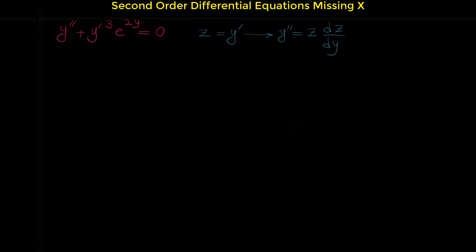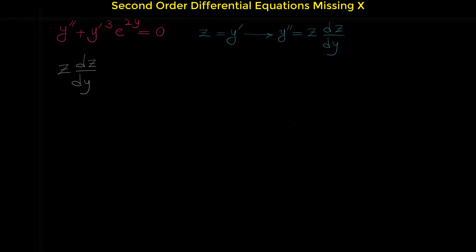Based on this substitution, if we replace y double prime with z dz over dy, and replace y prime with z, we get to this differential equation: z dz over dy plus z cubed e to the 2y equals 0.